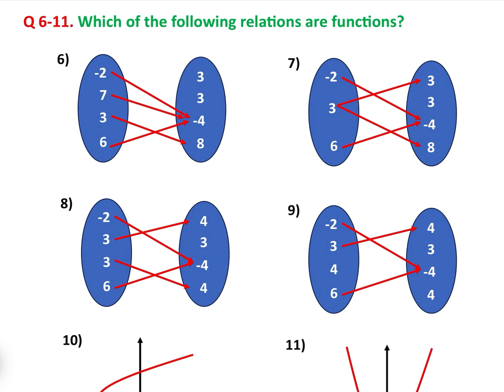Which of the following relations are functions? Let's remind ourselves of exactly what the definition of a function is: a function has to associate every element of the input to exactly one element of the output. In question six, we have four elements in the input and they are all mapped to exactly one element in the output. They don't have to be mapped to different elements, but they have to be mapped to one. Minus two, seven, three, and six are all mapped to one. So this is a function.